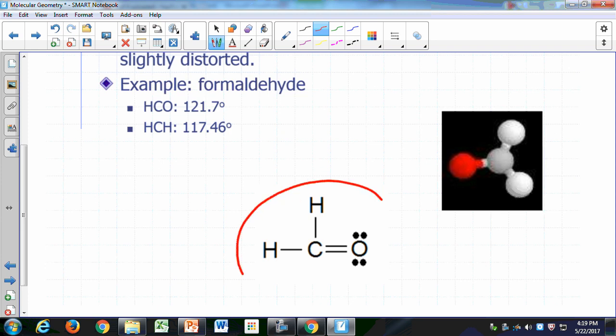Here's the Lewis structure for formaldehyde. If you look at this carbon atom, you have one, two, three groups sticking out of it. So they're going to be 120 degrees apart, more or less. Here's your oxygen right here, here's your carbon, here's your hydrogen, and here's your hydrogen.